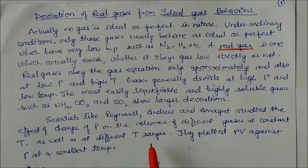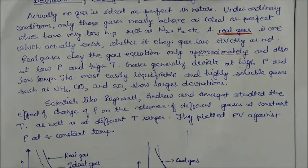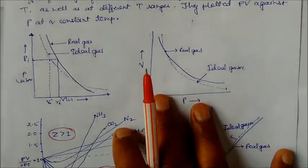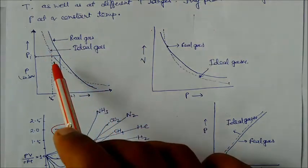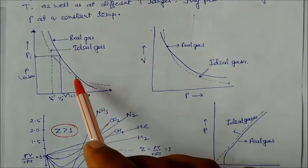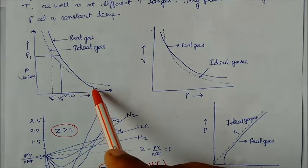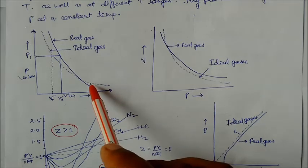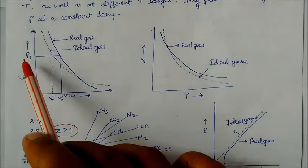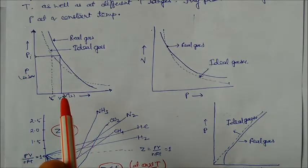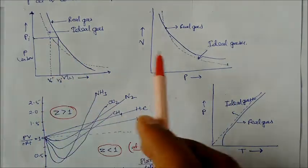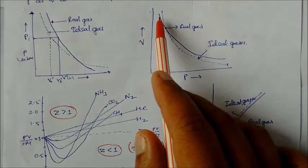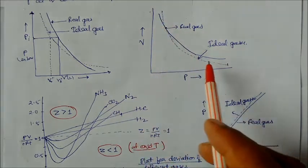They plotted pressure-volume (PV) against pressure at constant temperature. You can see the graph here: the dotted line is the ideal gas graph, and the solid line is the real gas graph. At a certain point, the volume of real gas becomes larger while the volume of ideal gas becomes lower. We can also draw this graph as volume versus pressure, where the volume of real gas is larger and ideal gas volume is smaller.